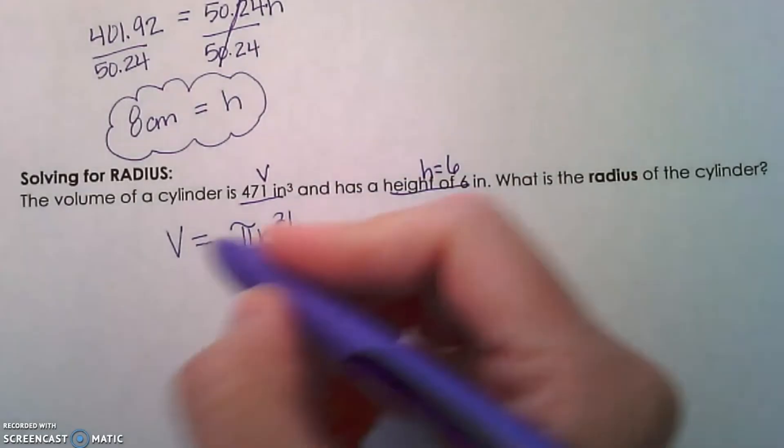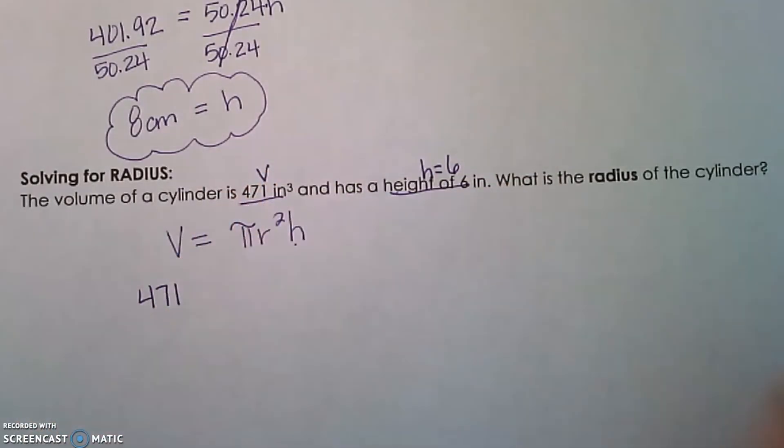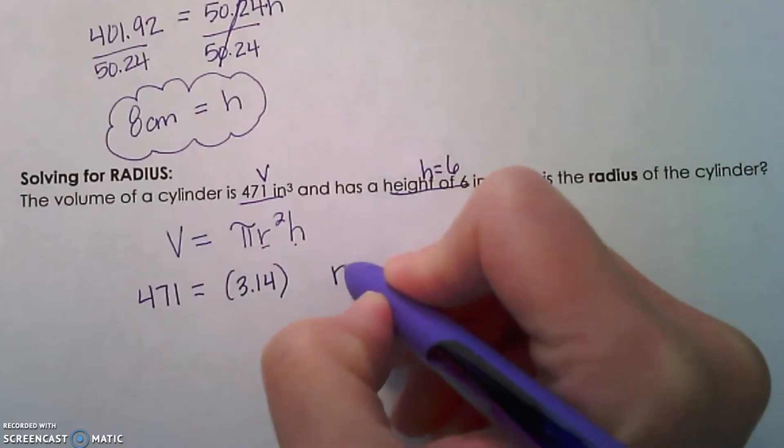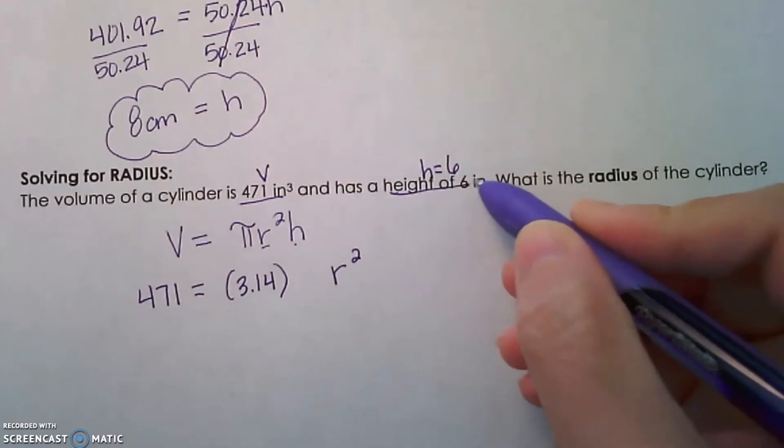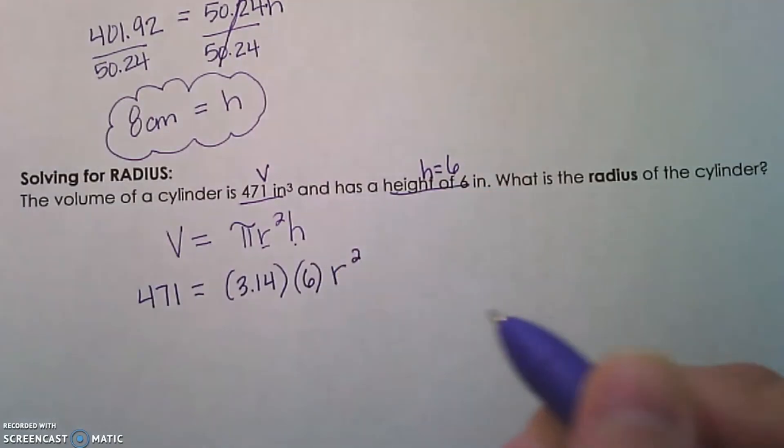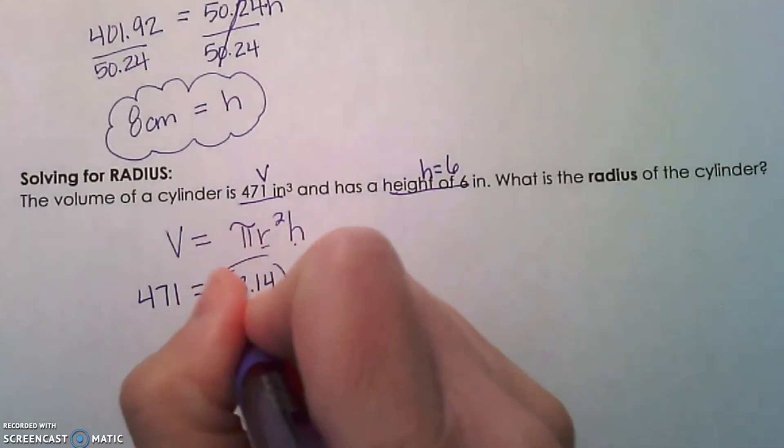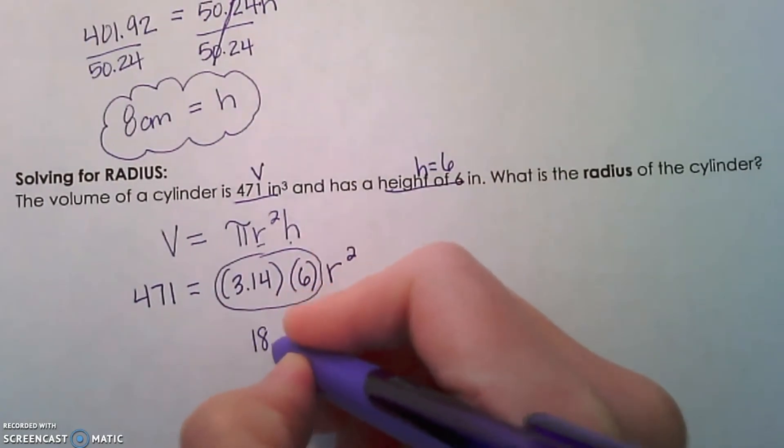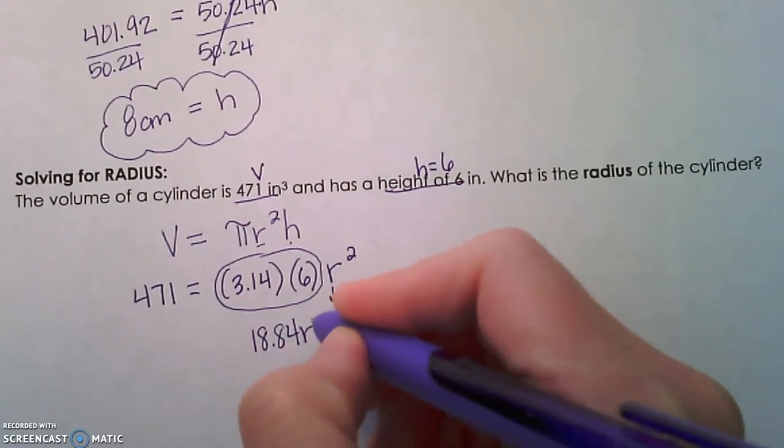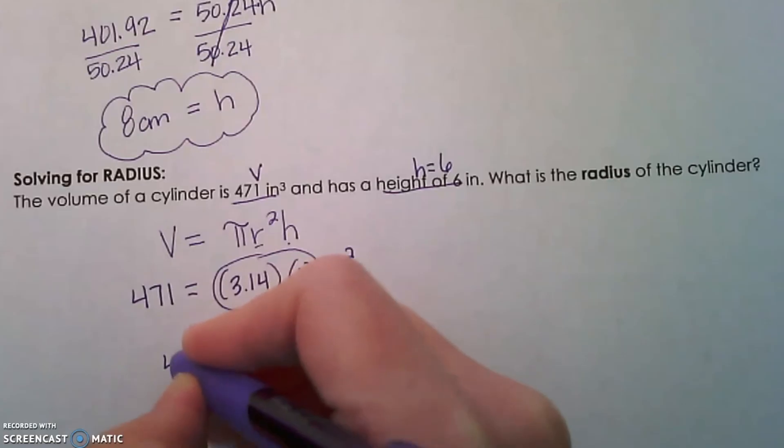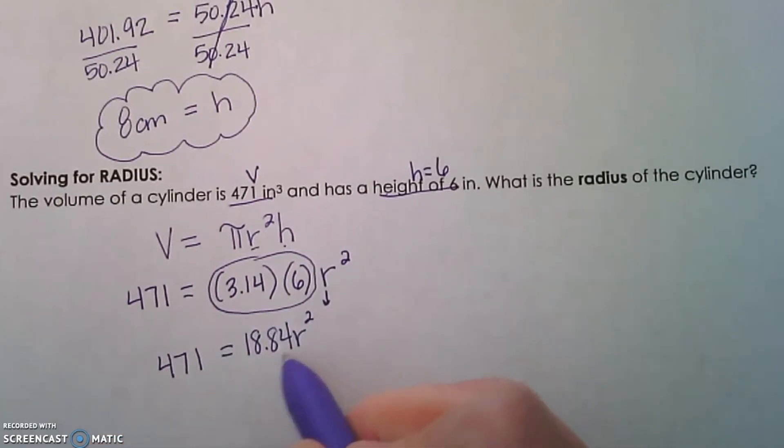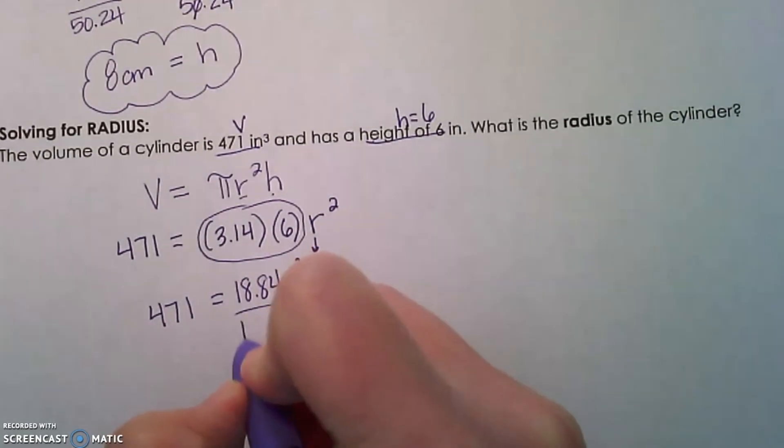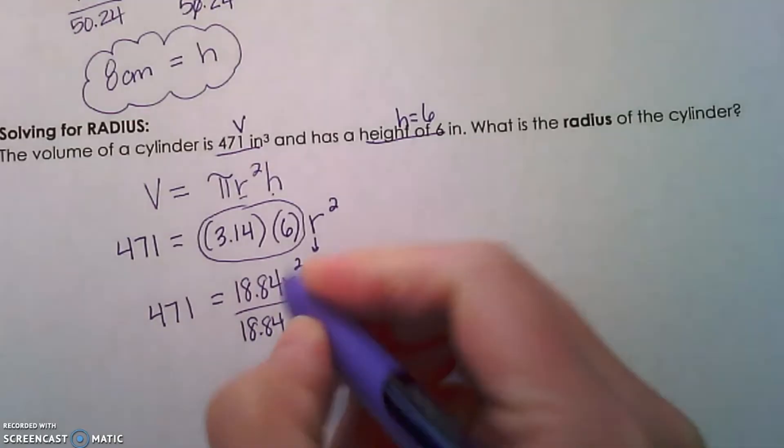We're going to solve for radius. Let's substitute 471 in for V. We're going to use 3.14 for π. I don't know what radius squared is, so I'm going to write that as a variable, but I do know the height is 6, so we're going to substitute a 6 in there. Next step is going to be to multiply π times 6. When we do that, we get 18.84. Now 18.84 times r squared, we need to use the inverse operation. Let's divide by 18.84. That's going to isolate r squared.